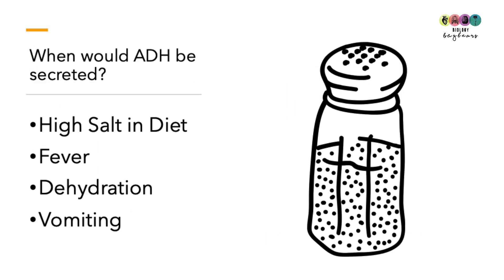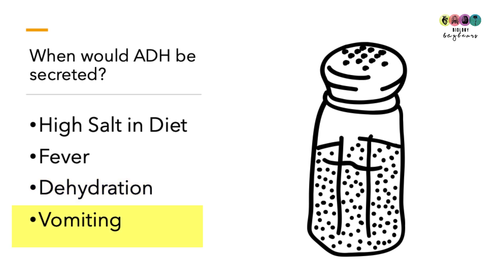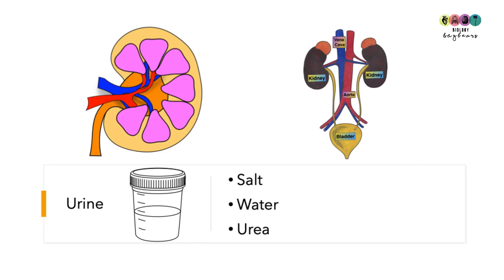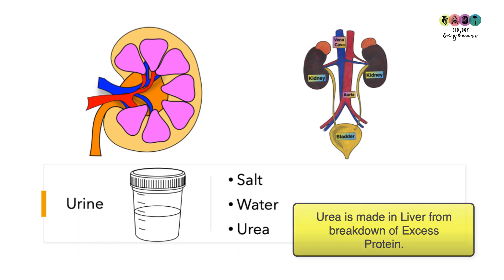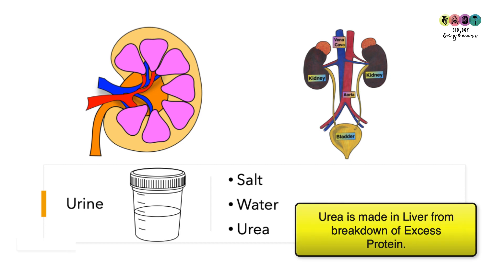ADH is secreted when the body needs more water reabsorbed — for example, after a diet high in salt, a fever causing heavy sweating, dehydration from exercise in hot weather, or vomiting from illness. At the end of this process, urine flows out of the kidneys through the ureters towards the bladder. Urine is mostly water, salts, and urea — remember that urea is made in the liver from the breakdown of excess protein.